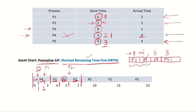P2 runs for two time units and finishes at time 7. In the meantime, no other process has arrived. Now P5 will start running because it has the shortest CPU burst time among the remaining processes, and it runs until time 10. Then P1 is allocated the CPU and runs for five time units, after which P3 is given the CPU and runs for eight time units.